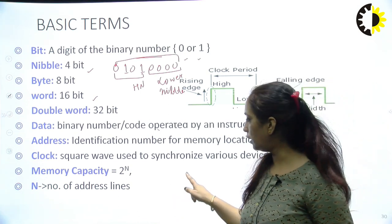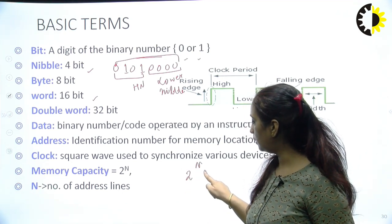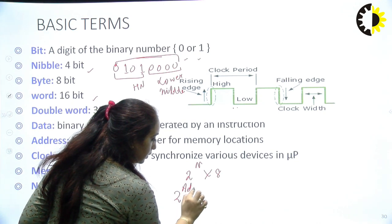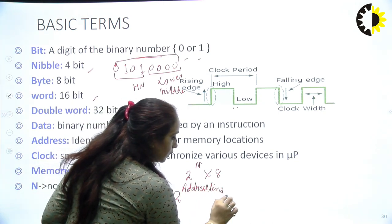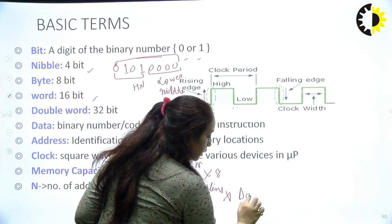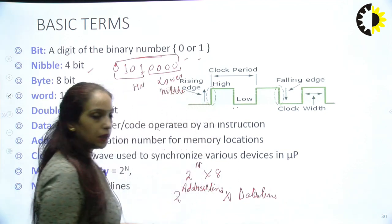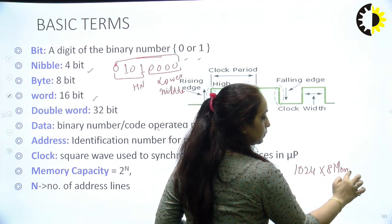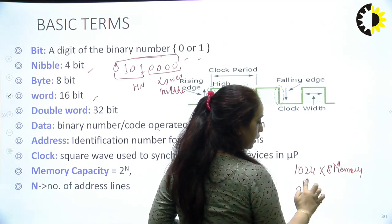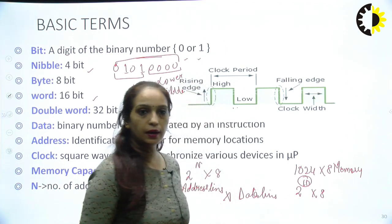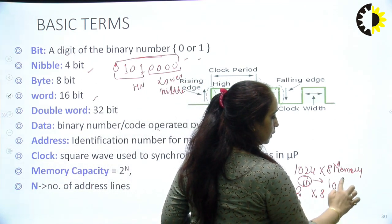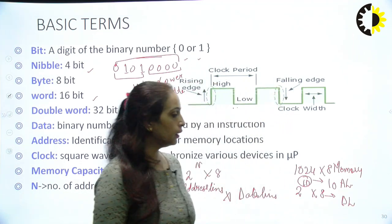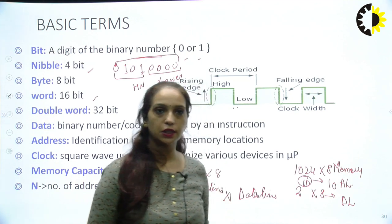Memory capacity is written as 2 raised to the power n multiplied by 8, where n represents the number of address lines and 8 is the number of data lines. For example, a memory size of 1024 × 8 means 2 raised to the power 10 cross 8 — so there are 10 address lines and 8 data lines, and with those 10 address lines, 1024 memory locations can be accessed.